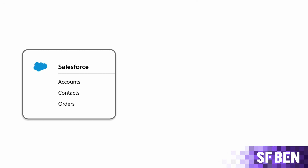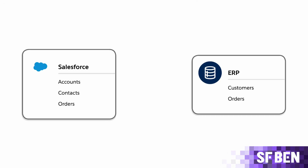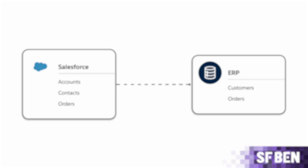In our next example, we have Salesforce connected to an ERP system. When we close an opportunity in Salesforce, we want to create an order in the ERP system, sending over the relevant customer and product details. In this integration, we are sending data from Salesforce to an external system, and so the integration is outbound.